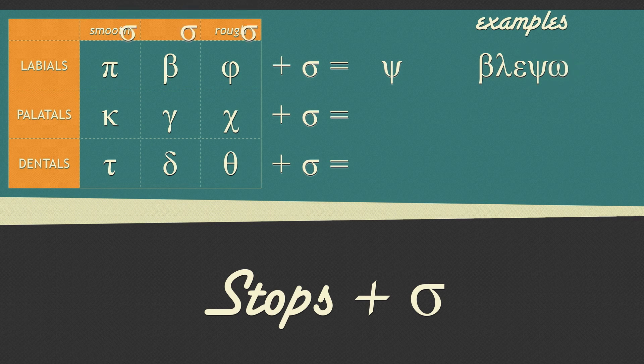When a word ends in any palatal and a sigma is added, it becomes a psi. Here's an example. The word stem ends in a palatal and when an ending with a sigma is added, the palatal plus sigma equals a psi.